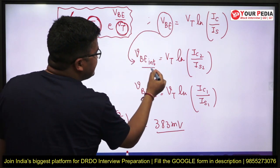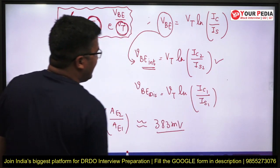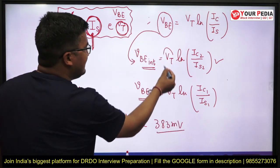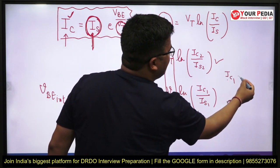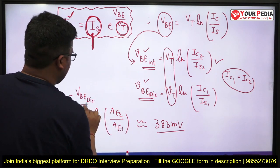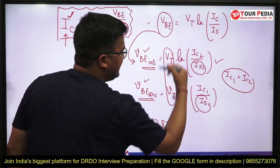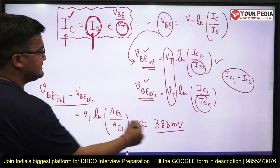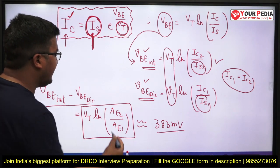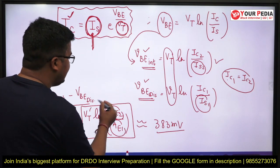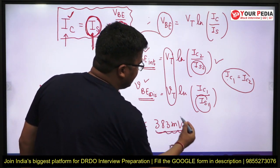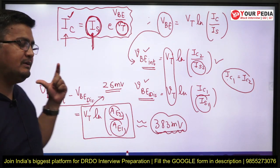We need to find the base-to-emitter voltage difference. Writing the expression for the IC transistor (transistor 2) and for the discrete BJT (transistor 1), and using the fact that IC1 = IC2 as provided in the question, we need to calculate ΔVBE = VBE1 − VBE2. Since the areas are different, the scaling currents IS1 and IS2 are different. Differentiating and using the logarithmic property, we get: ΔVBE = VT · ln(A1 / A2). The interviewer provided both areas, and at room temperature VT = 26 mV.